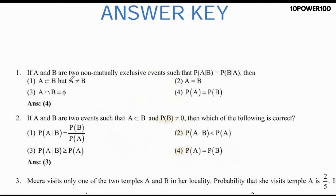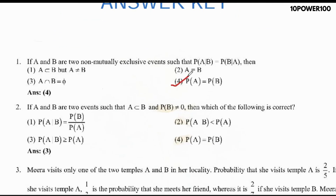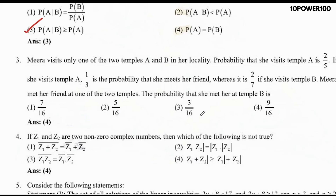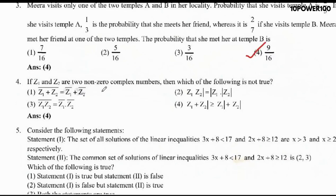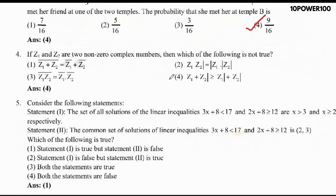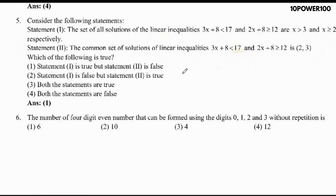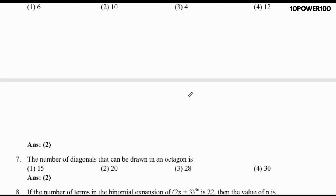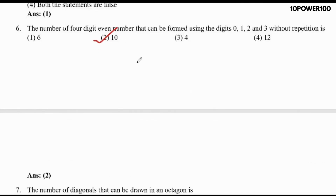Let's check our answers. Question number 1: option 4 is the right answer. Question number 2, on probability: option 3 is the right answer. Question number 3, also based on probability: option 4 is the right answer. Question number 4, on complex numbers: option 4 is the right answer. Question number 5, on linear inequalities: option 1 is the right answer. Question number 6, based on permutation: option 2 is the right answer.